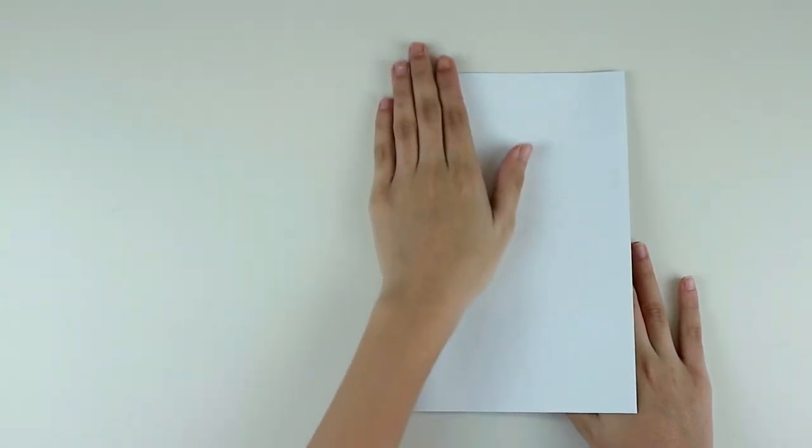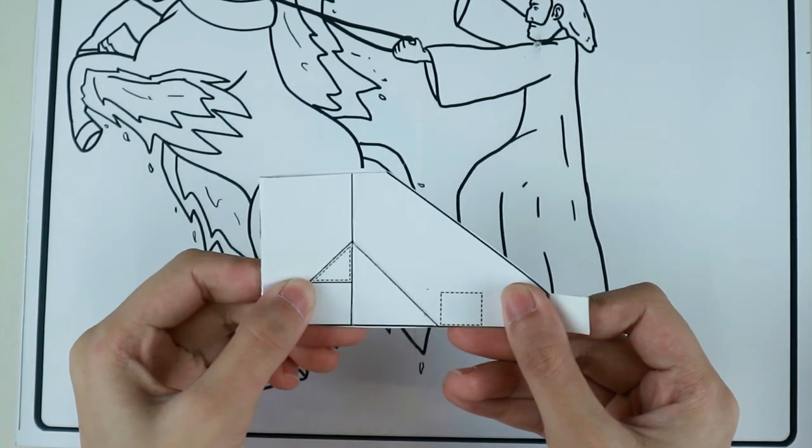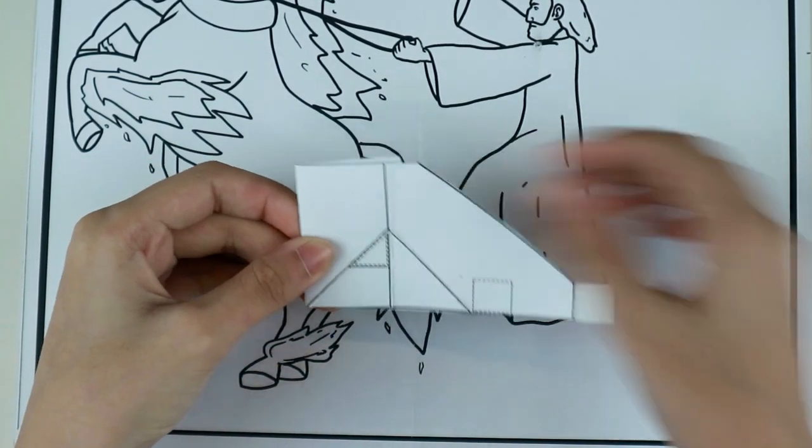Next, fold the coloring page in half. We will now attach the pop-up arm but before sticking it on the page, we must measure out the position first.